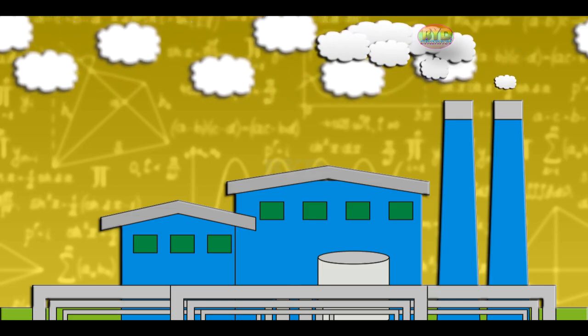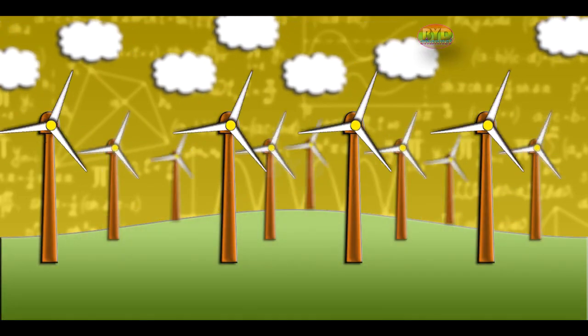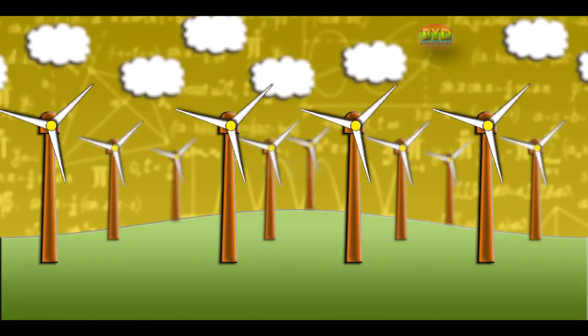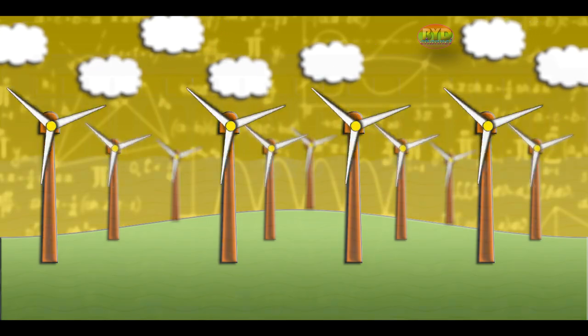Electricity is produced in various power plants such as thermal power, wind power stations, and hydroelectric power plants.